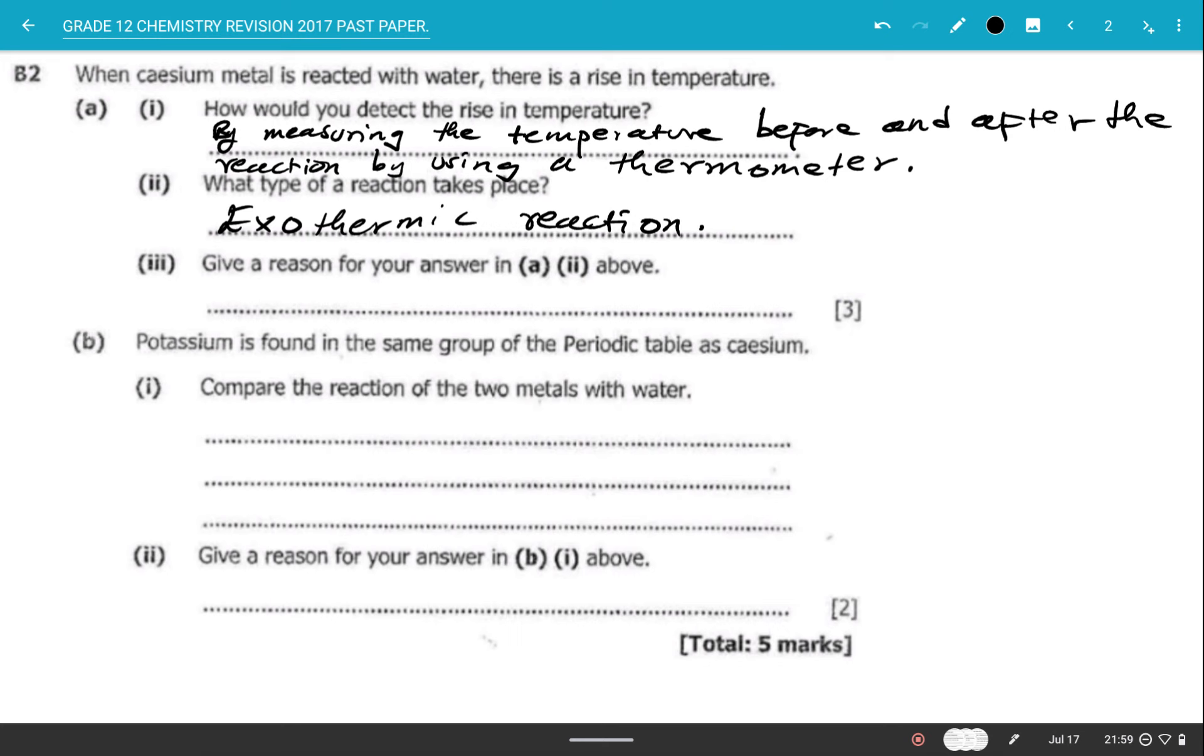The type of reaction that we have is simply exothermic reaction. Now it says give a reason for your answer in part 2 above. It's because heat energy is given out. So we said because heat energy is given out causing the rise in temperature.